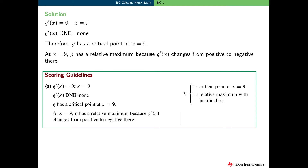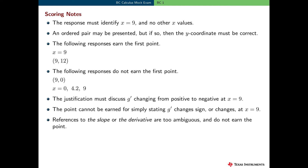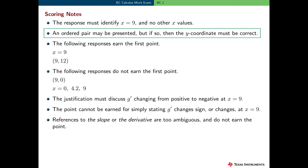Here are some typical scoring guidelines for this type of problem. This problem is worth two points: one point for identifying the only critical point x equal 9, and one point for correctly classifying it as a relative maximum and providing appropriate justification. The response must identify x equal 9 and no other x values. If the student presents two or three or five critical points, they do not earn the first point. If an ordered pair is presented, the y coordinate must be correct — that is, g of 9, which equals 12.